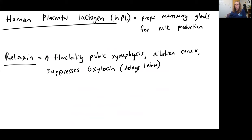HPL helps prep the mammary glands for milk production — you need the formation of the placenta to get full development of the mammary glands. Relaxin is important in increasing the flexibility of the pubic symphysis to allow more stretch for passage of the head through the birth canal. It's also important in dilating the cervix and suppressing the release of oxytocin, which helps delay premature labor. Oxytocin causes myometrial contractions, making it an important hormone in labor and delivery.